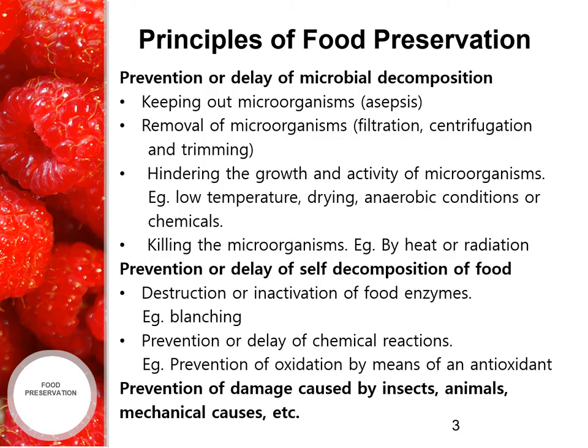Now let's see what are the principles of food preservation. The first principle is prevention or delay of microbial decomposition, which is achieved by keeping out microorganisms — also known as asepsis — by removal of microorganisms through filtration, centrifugation and trimming, by hindering the growth and activity of microorganisms by low temperature, drying, anaerobic conditions or chemicals, and by killing the microorganisms by heat or by radiation.